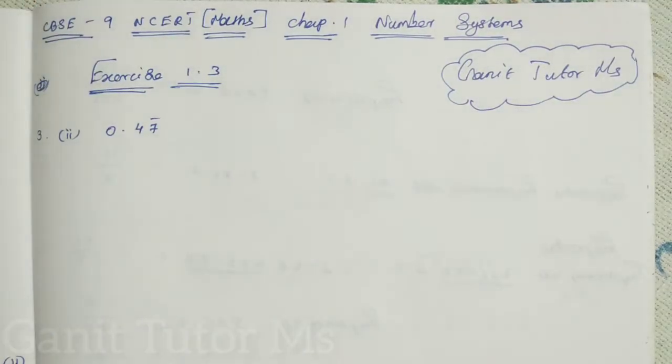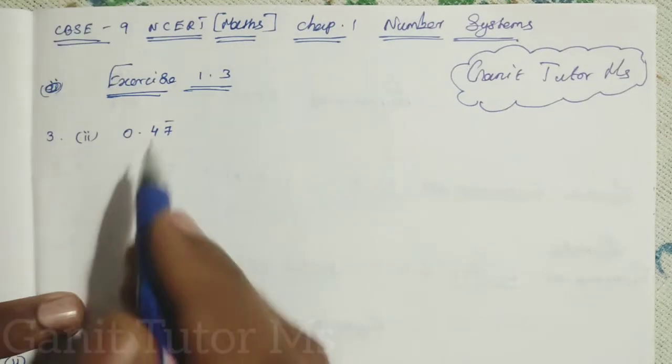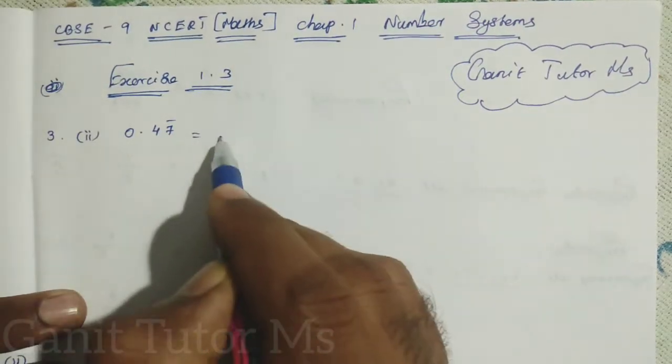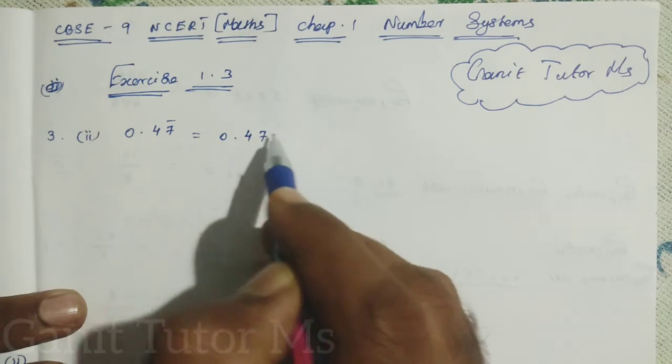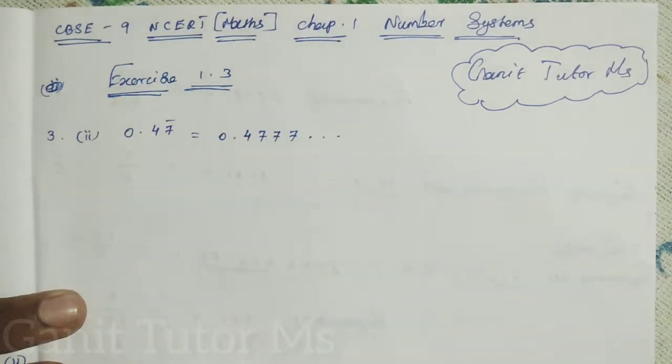So first number 0.47 bar. So 47 bar it means 0.47 alone it is repeating, clear? So now you can tell me what kind of decimal expansion it is. It is non-terminating as well as repeating, right, non-terminating, repeating.